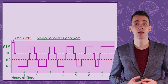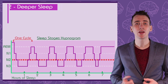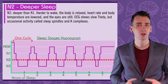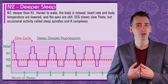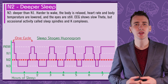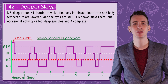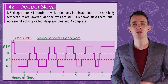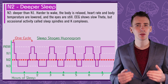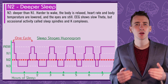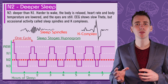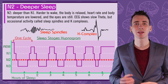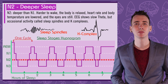N2 is deeper sleep. You're less easy to wake and the body relaxes. Heart rate and body temperature falls and the eyes are still. This stage can be identified on the EEG by slowing of brainwaves but occasional bursts of activity called sleep spindles and K complexes.